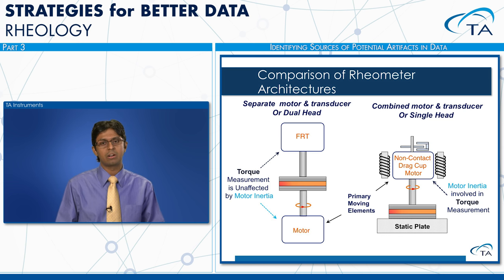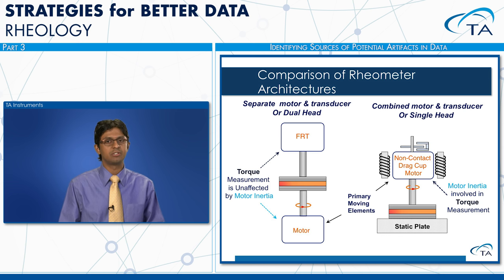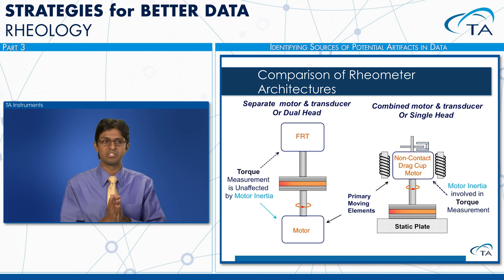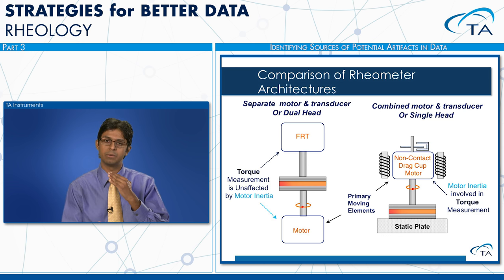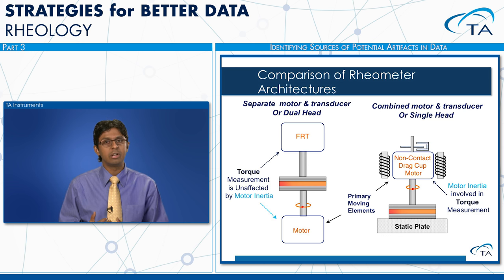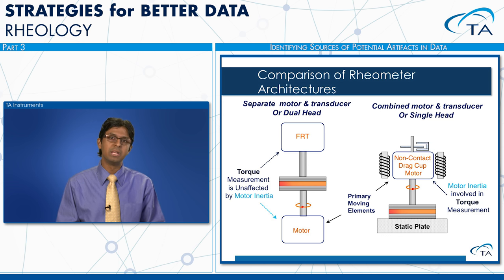In a separate motor transducer or dual head design, the motor moves on the bottom and torque is measured independently by a force and torque rebalance transducer, so the torque measurement is unaffected by inertia. With a combined motor transducer design, a drag cup motor applies torque, so motor inertia is involved in the torque measurement — making it imperative to minimize motor inertia as much as possible in the instrument design.